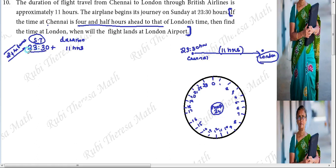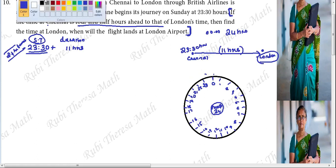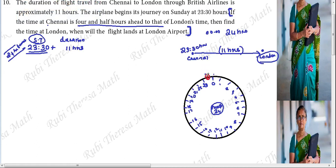How many hours do we have in a day? 24 hours, starting from 00 hours. So starting time is 23:30. Now we add the duration: plus 11 hours. We count 1, 2, 3, 4, 5, 6, 7, 8, 9, 10, 11 — so we move 11 steps forward from 23:30.